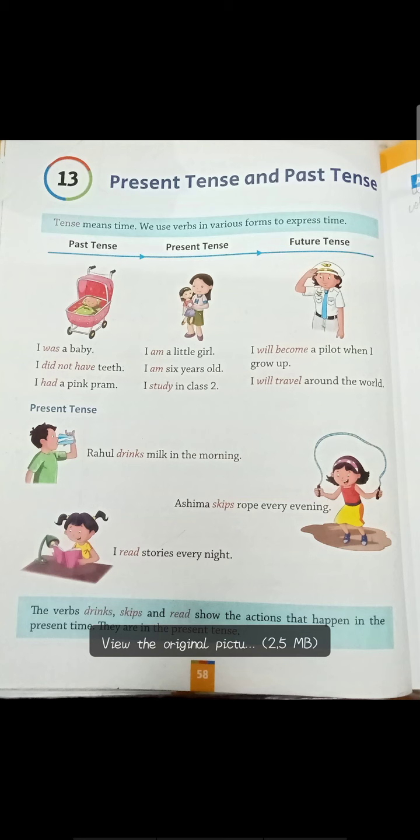Past means bita hua kal, means jo kal guzar chuka hai — yesterday. Present means abhi jo chal raha hai — that is present. And future means aane waala kal — tomorrow.